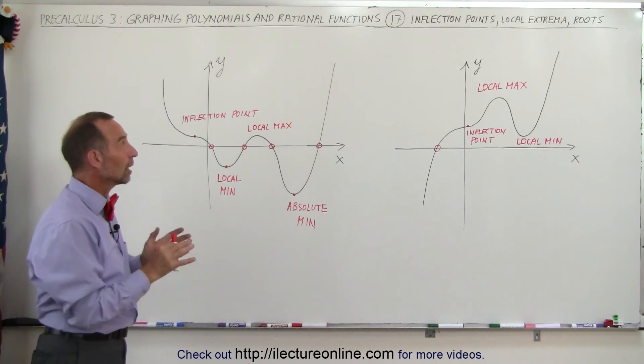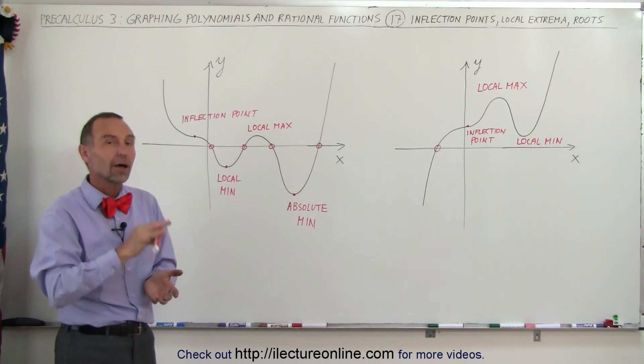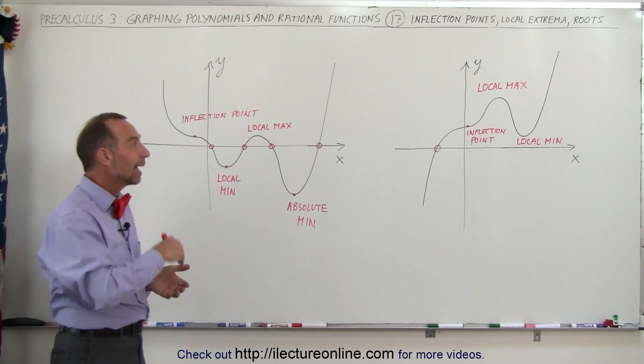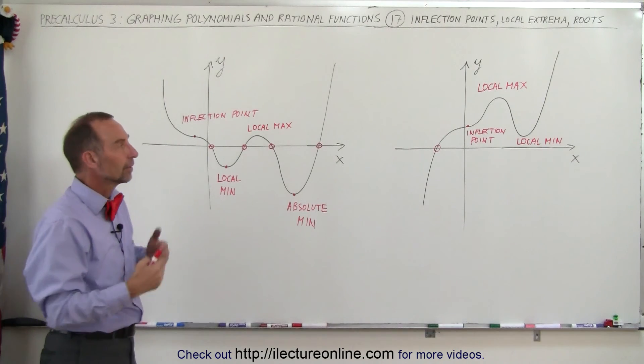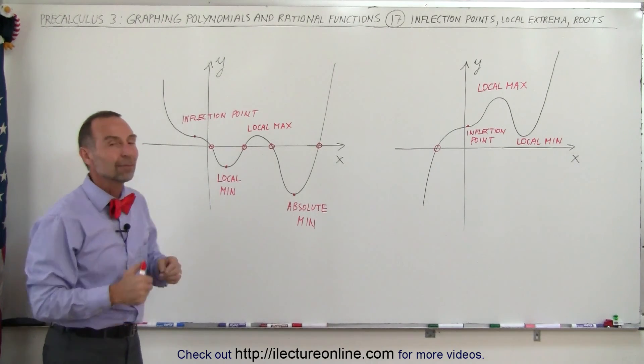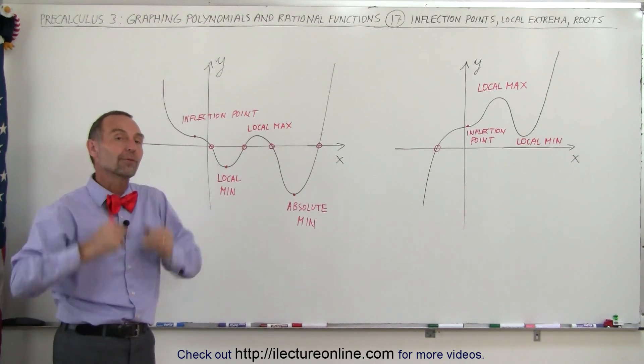So now you understand at least the terminology of an inflection point, a local max, a local min, an absolute max, an absolute min. And then of course we have some absolute max and min here that are not defined because they go out to infinity.